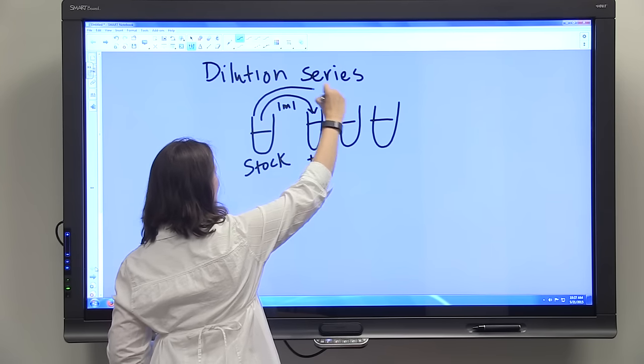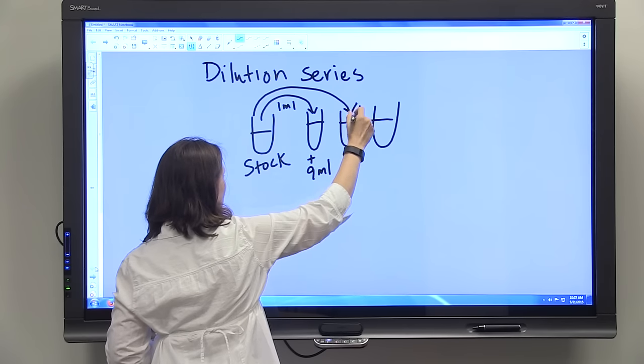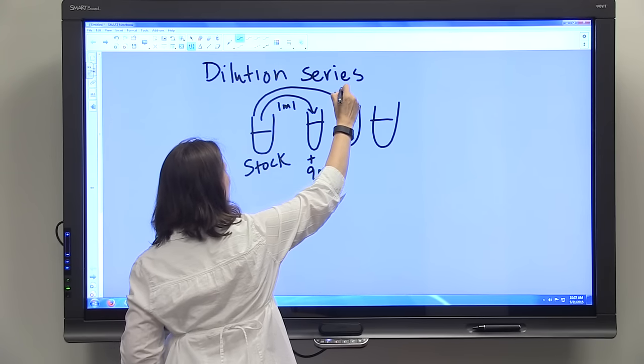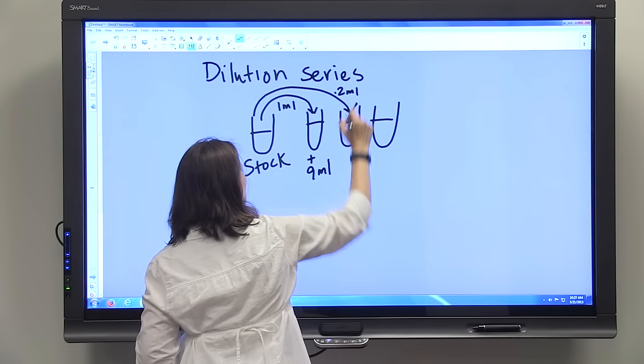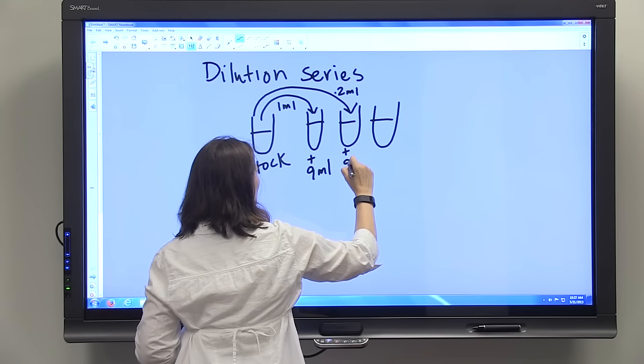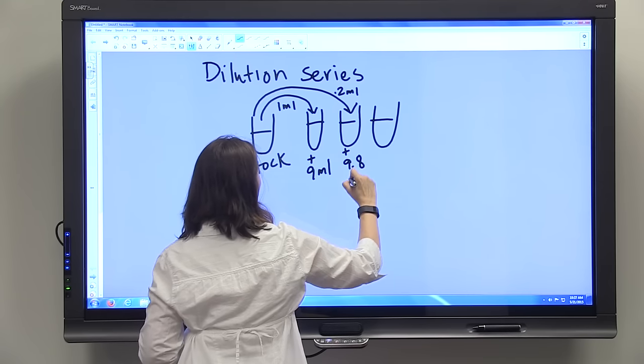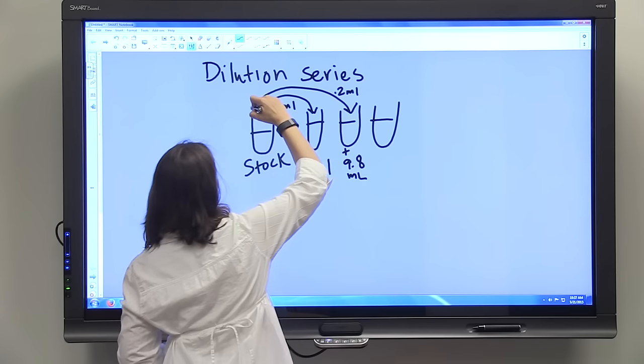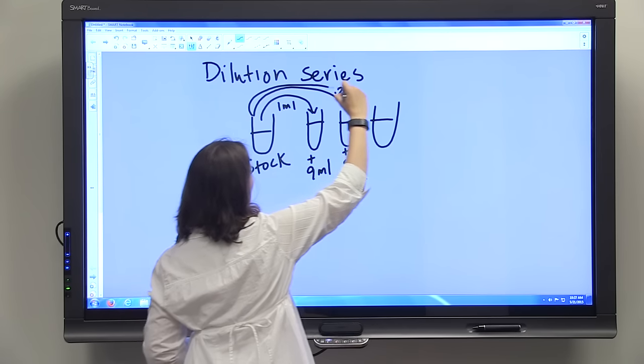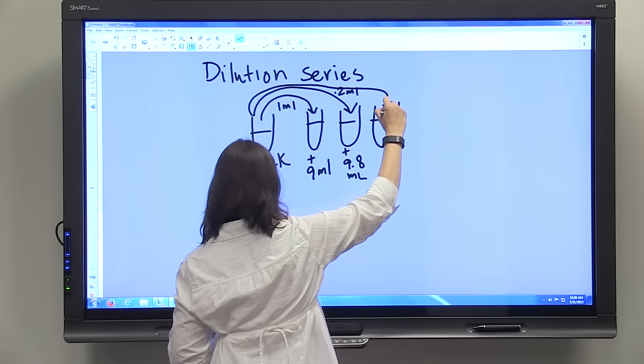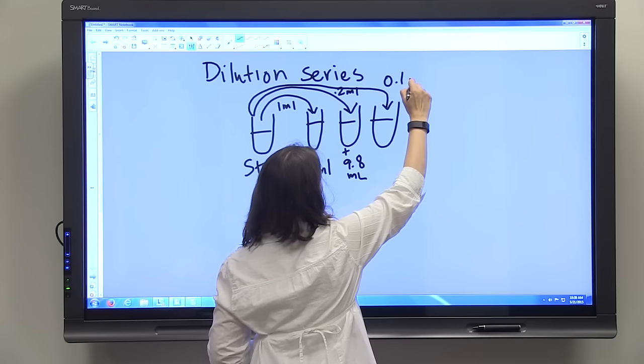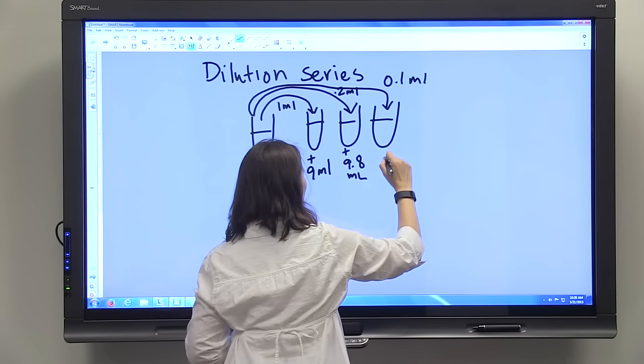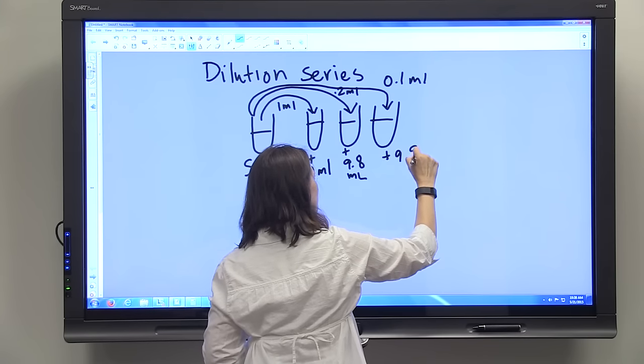You're going to use the stock again for the second test tube, but there you're just going to put 0.2 ml's and 9.8 ml's of diluent and into your third test tube 0.1 ml's and 9.9 ml's of diluent.